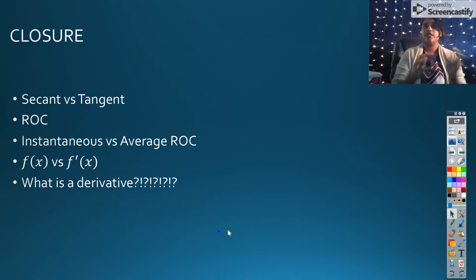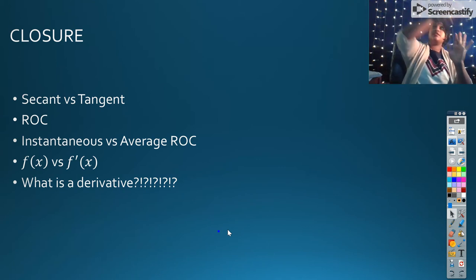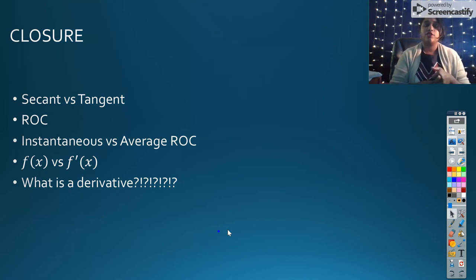Instantaneous versus average. Again, instantaneous means at that point. What is the rate? What's happening? That is our tangent. Very good. And our average rate of change, again, that's between two values. And all of the stuff in between those two values is approximately that same average rate of change.